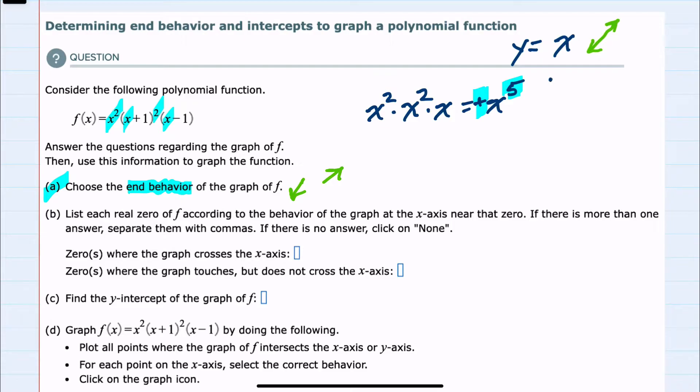And just to review, if it would have been a negative leading coefficient and odd, it would have been the same end behavior as y equals negative x, up to the left, down to the right. If we would have had positive coefficient and even, even if the degree was 4, 6, and so on, the end behavior would be the same as y equals x squared, which would be up to the left and up to the right. If we would have had a negative leading coefficient and an even degree, then we would have had the opposite, down to the left and down to the right. So we use our basic shapes and end behaviors to determine other end behaviors based on the sign of the leading coefficient and whether the degree is even or odd.